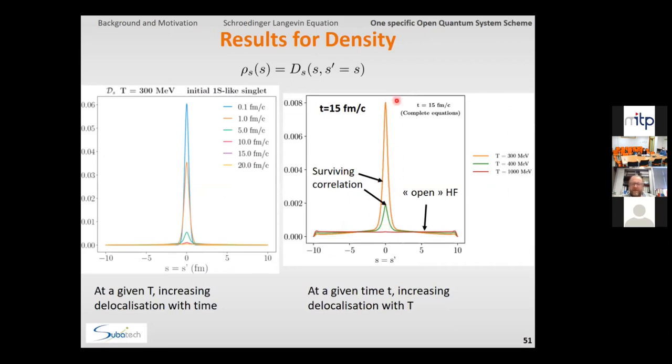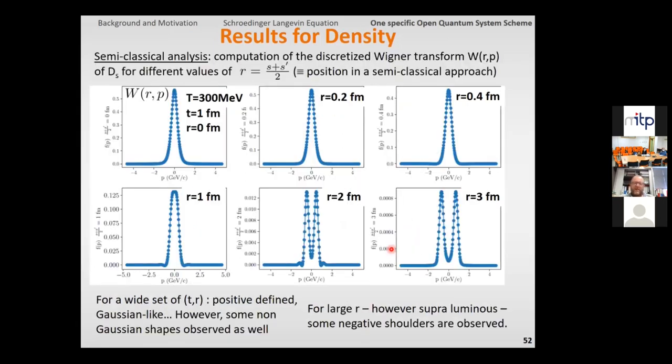So, if we now want to understand better this surviving correlation as well as its nature that happens at small relative distance, then a good idea is to resort to some discrete Wigner transforms, so if you are in the realm of semi-classical validity, then the Wigner transform should be purely Gaussian, and even at short time, this is typically what we observe for most of the cases, except here for some distance that somehow corresponds to a tachyonic mode, so you can see one is definitely not too far apart from a semi-classical treatment if one looks here at these observables,